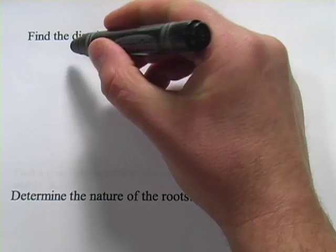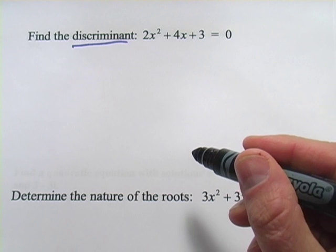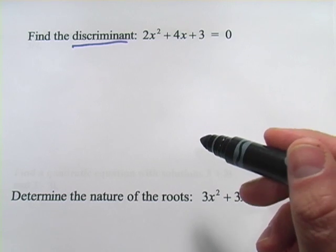In these problems, we're looking at something called the discriminant. When you're working with the quadratic formula, knowing what the discriminant is and being able to evaluate it quickly is a really useful thing.